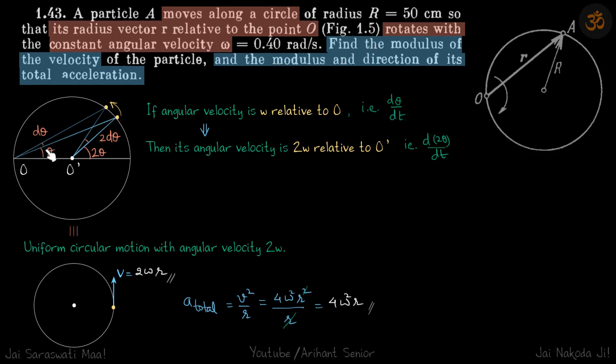Now see this, if this is an angle theta, then obviously the center subtends an angle 2*theta. Which means if it travels an extra angle d*theta, then this angle will go by 2*d*theta. Because theta plus d*theta, double of that will be 2*theta plus 2*d*theta.